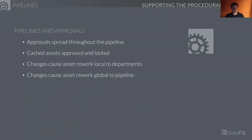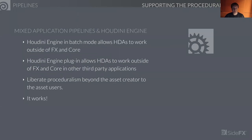Pipelines and approvals are very key. It's the approval mechanism that determines whether an asset is a go or no-go. Approvals are spread throughout the pipeline, and you never know when an asset is going to be invalidated, forcing huge amounts of rework. The worst thing is when this happens at the back end. Cached assets are approved and locked — changes cause rework to local departments.